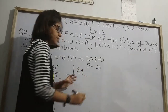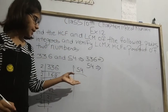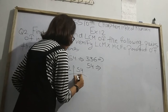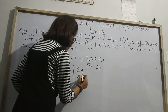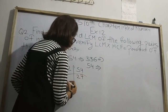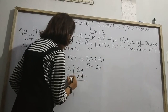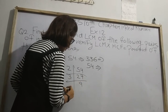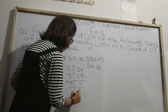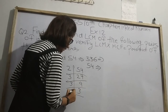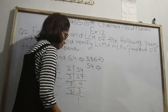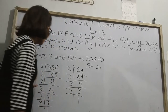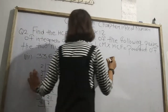Now for 54 — by which number can it be divided? That is 2: 54 ÷ 2 = 27. Now by 3: 27 ÷ 3 = 9, again 9 ÷ 3 = 3, and finally 3 ÷ 3 = 1. Done.